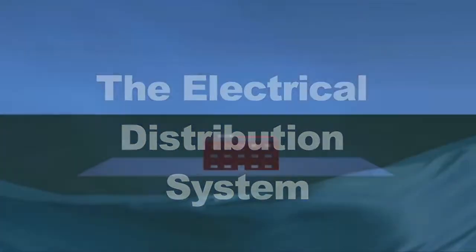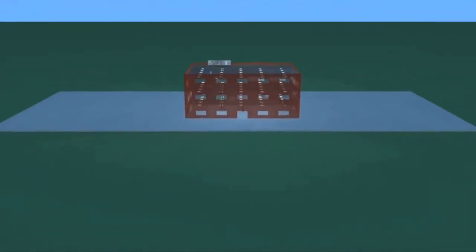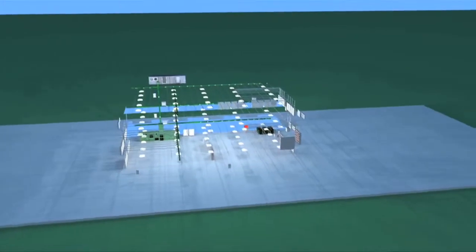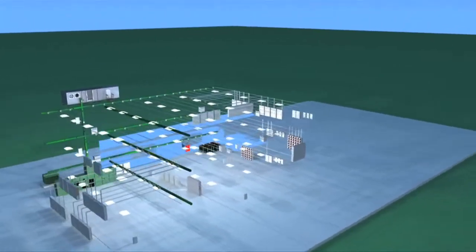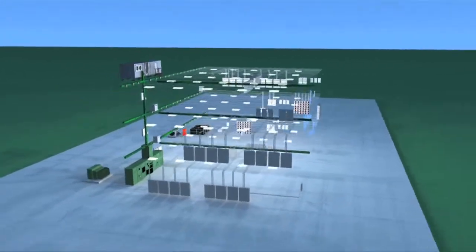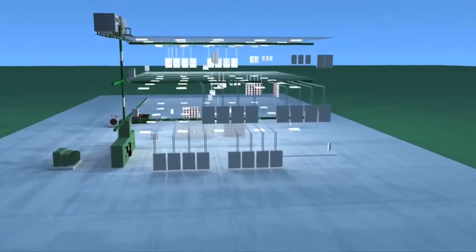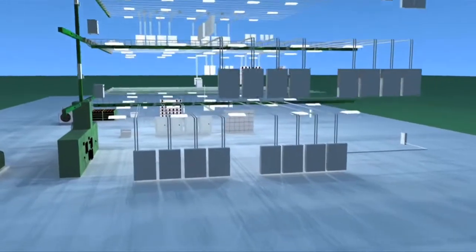The electrical distribution system will have a unique layout for each individual facility. You will not always find every type of electrical component that we reviewed or the same configurations in every electrical distribution system that you examine. The key to identifying each layout is to begin at the incoming power source and identify each component and location as it distributes electrical power through the facility.